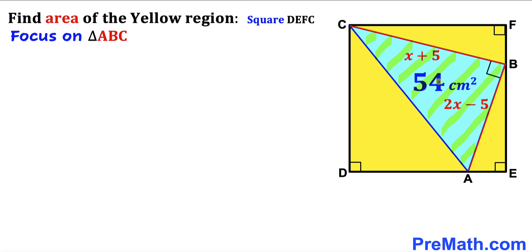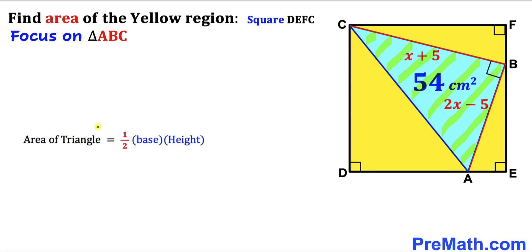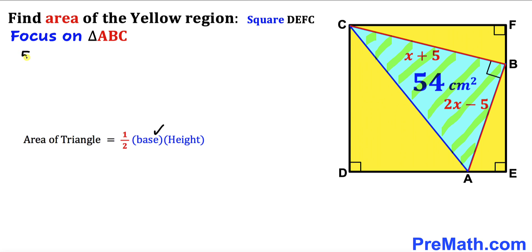Let's focus on right triangle ABC whose side lengths are x plus 5 and 2x minus 5, and whose area is 54. We need to find the value of x. Recalling the area formula: Area = ½ × base × height, we substitute: 54 = ½ × (x + 5) × (2x − 5).